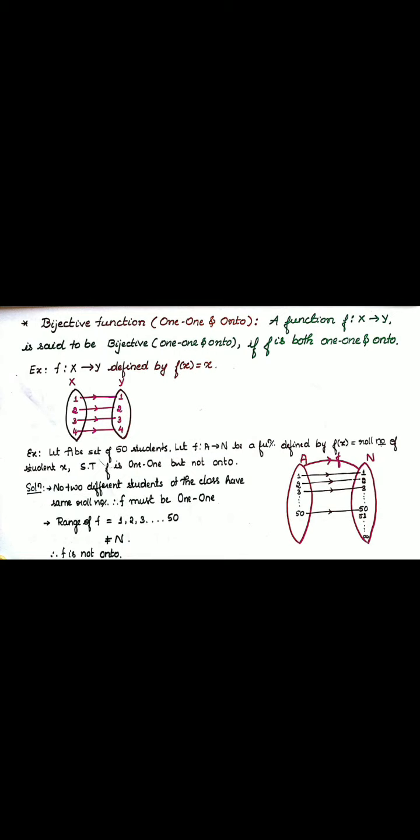So let us discuss the definition. A function f from x to y is said to be bijective function. It is also called as one-one and onto function if f is both one-one and onto.